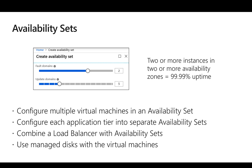There is one additional capability called availability zones, which provides high availability within a specific region and gives an SLA of 99.99 percent. Not all regions support availability zones at the moment, so whenever you are deploying a new service, please check whether the region supports availability zones — otherwise, use availability sets.